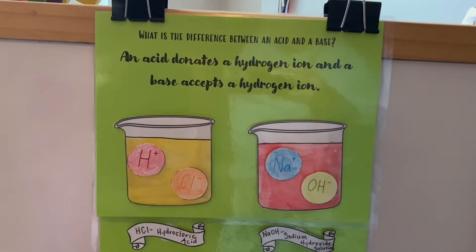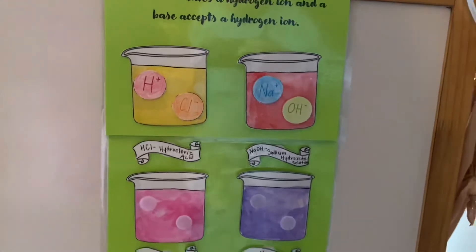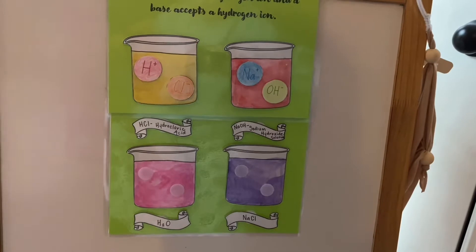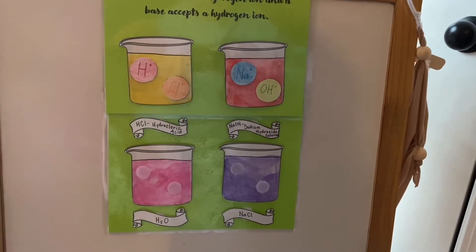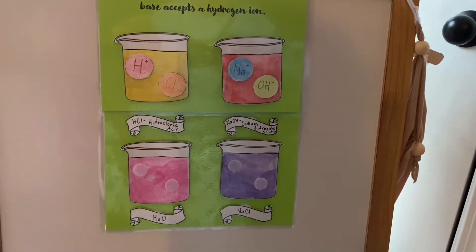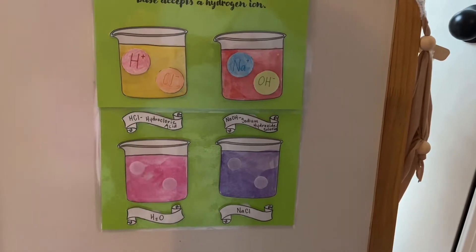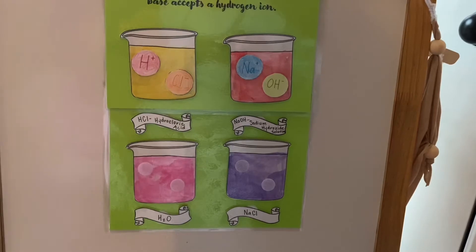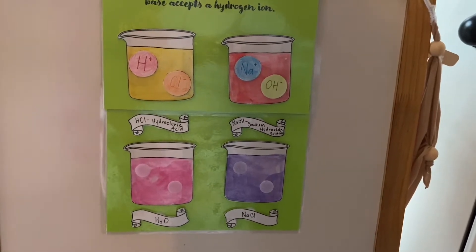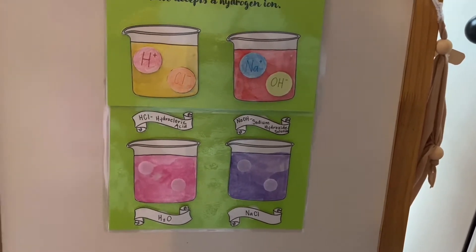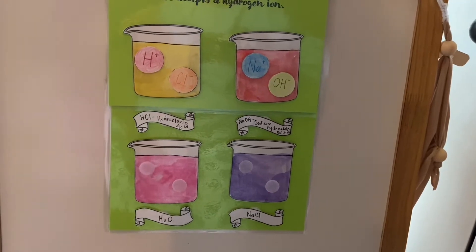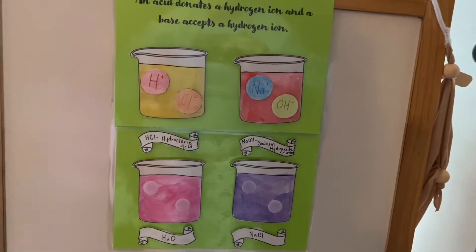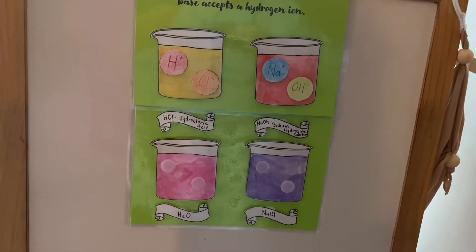My assistant here helps me make this really neat-looking chart, and she's going to help me explain what it means when an acid donates a hydrogen ion and a base accepts a hydrogen ion. An ion is just a fancy word for charged particle.